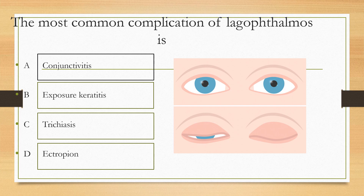The most common complication of lagophthalmos is: option A conjunctivitis, option B exposure keratitis, option C trichiasis, option D ectropion. The answer is option B, exposure keratitis, because there is inadequate closure which can cause corneal exposure, which can lead to exposure keratitis.